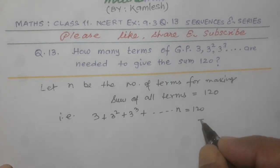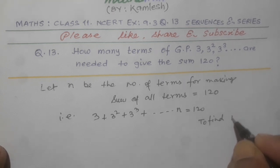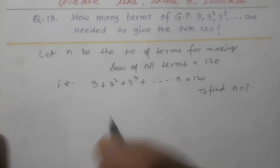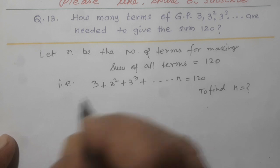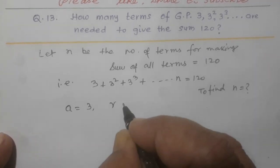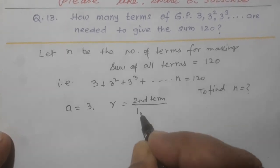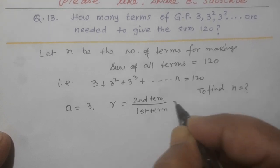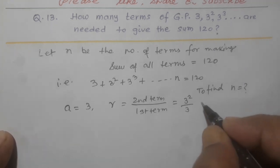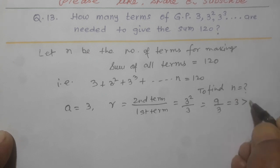To find nth term, in this GP we find that first term A is equal to 3, common ratio R is equal to second term by first term, equal to 3 square by 3, so it will be 9 by 3 equal to 3, which is greater than 1.